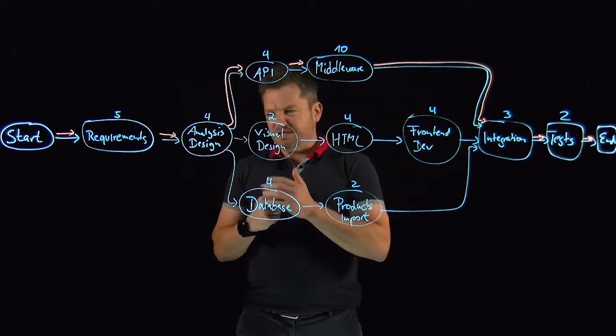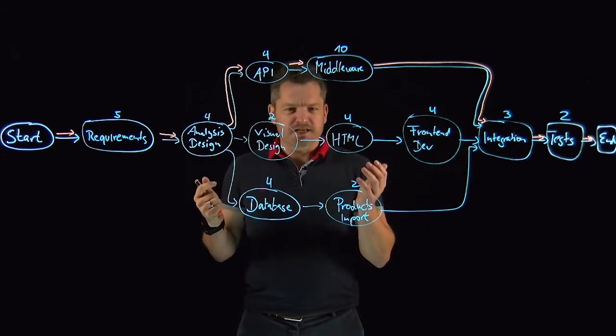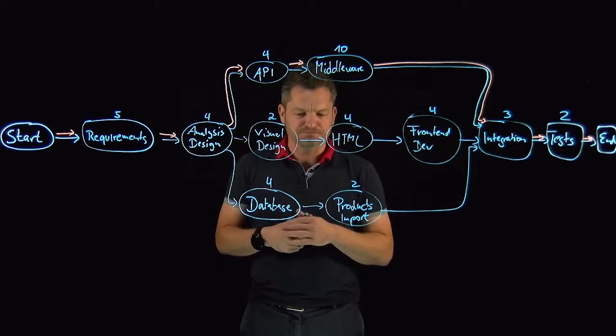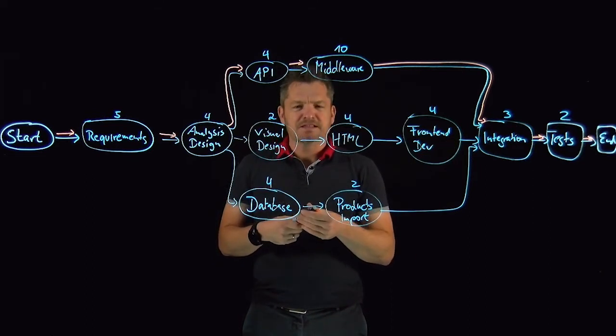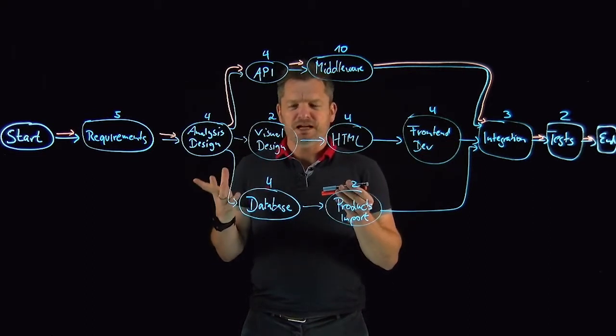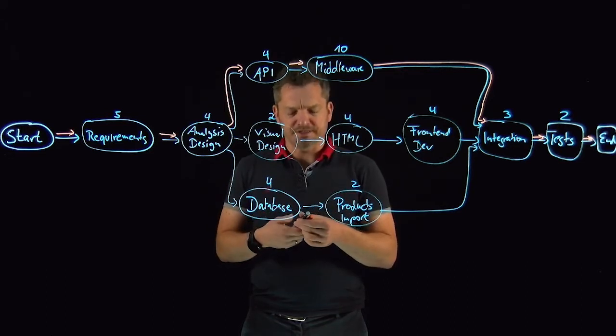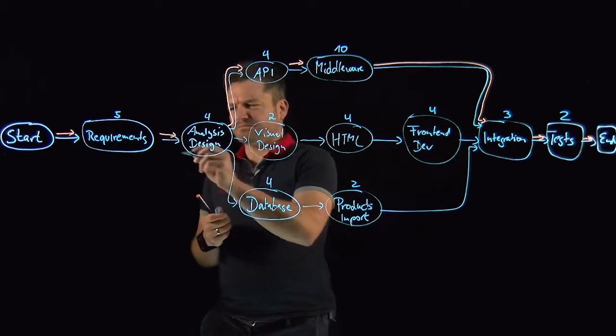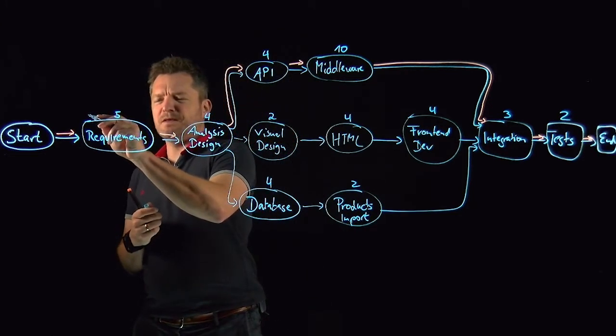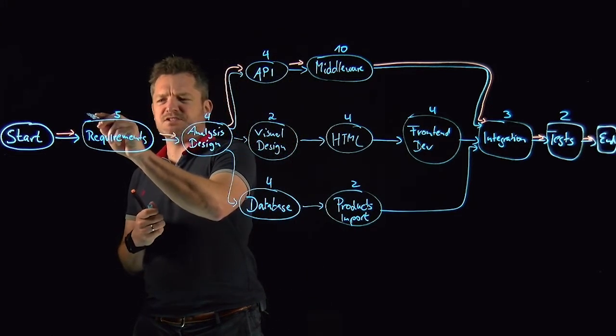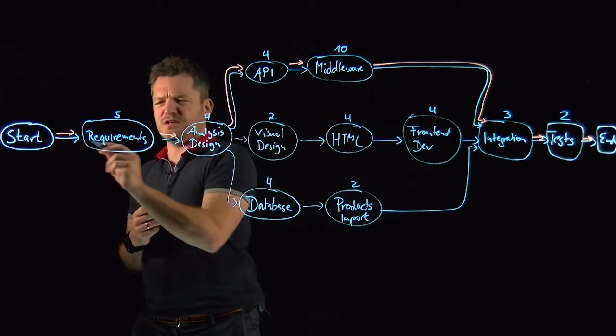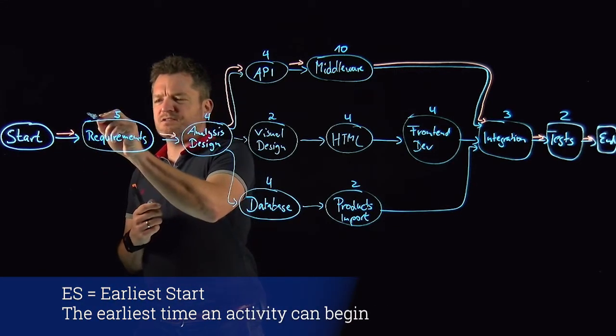And how are you doing this? Of course you move through this network diagram. So let's first of all have a look how you're gonna do that. First of all you write down at the top left the earliest start and the earliest start here for this activity because this is the start of the project is zero.